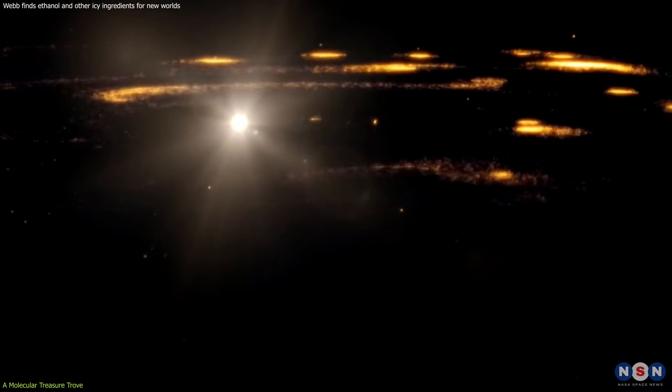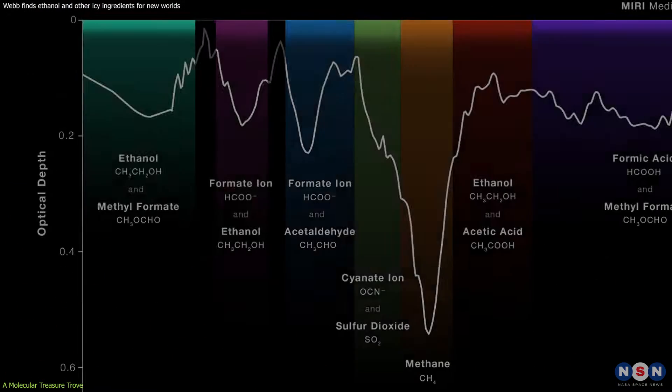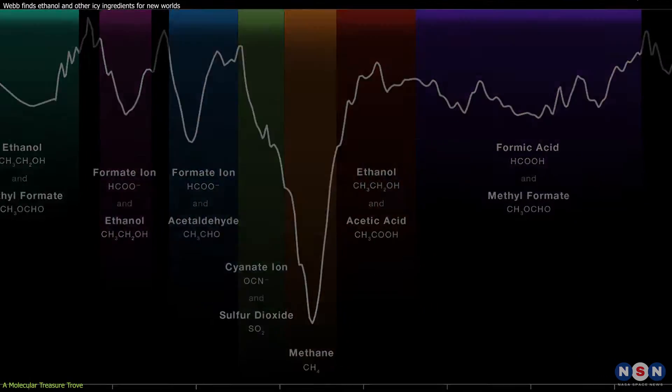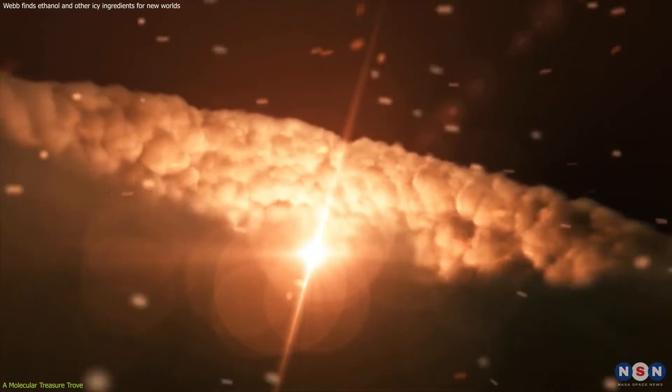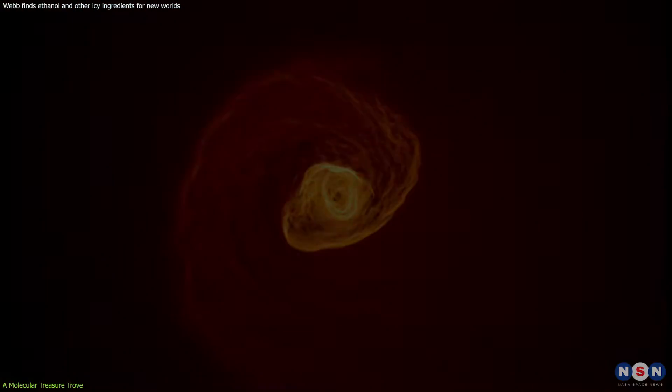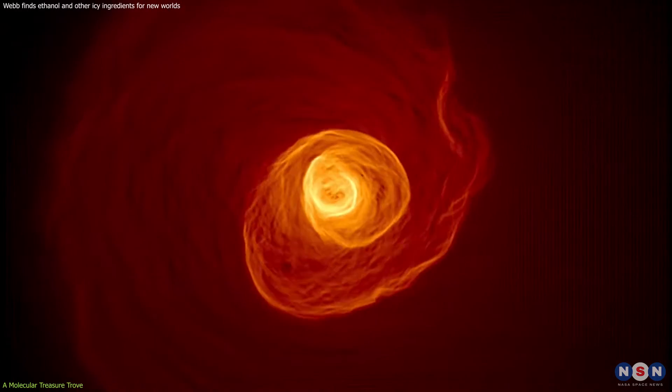Through a series of chemical reactions, possibly triggered by ultraviolet light or cosmic rays, these simple and complex molecules form on the icy surfaces. The presence of complex organic molecules, or COMs, in these protostellar environments is a crucial piece of the puzzle in our quest to understand the conditions necessary for life.